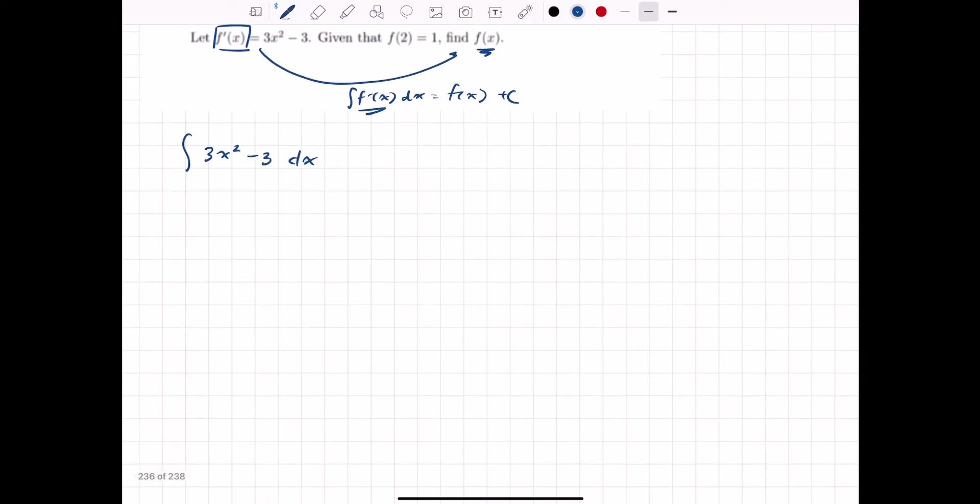Now, if you remember your integration laws, x squared, you raise it to a plus 1 power, and then you divide it by that plus 1 power. So 2 plus 1 is 3 over 3 minus 3x plus c. Remember, you can think of this as an x to the 0. So you add 1, it becomes 1 over 1, which is just x.